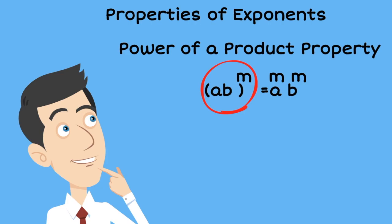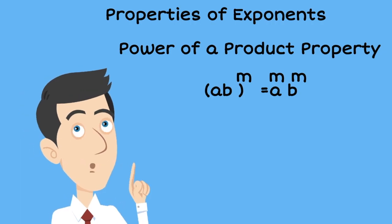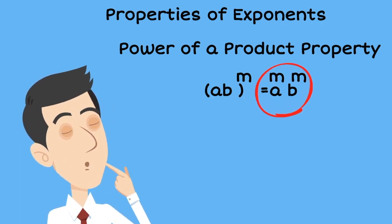If A and B are non-zero real numbers and M is any integer, then AB to M is equal to A to the M and B to the M.